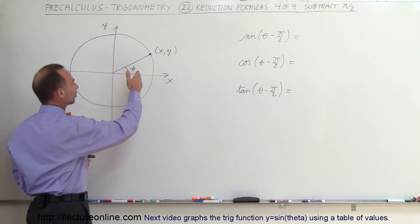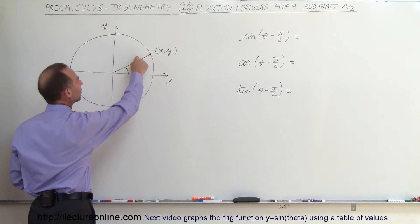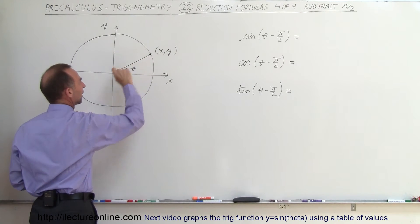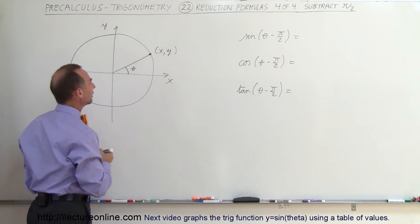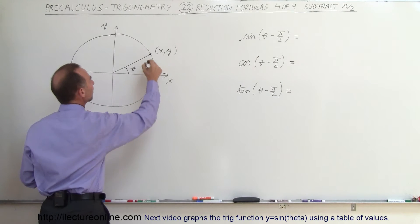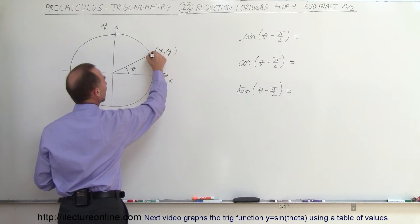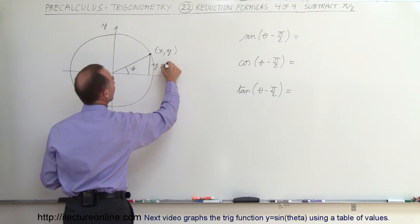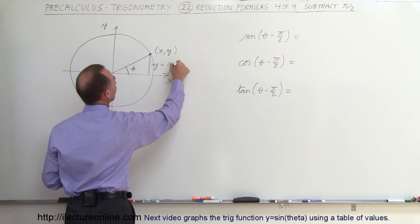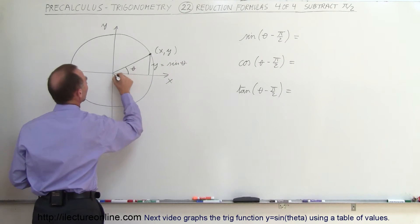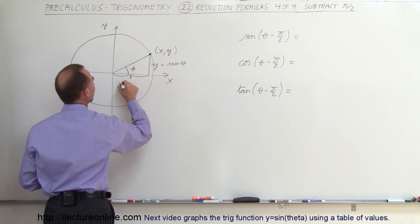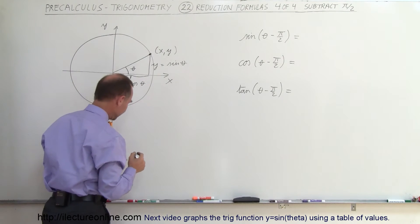Here we have our unit circle with radius 1. We have the x, y value on the unit circle based on the angle theta, which means that the y value is equal to the sine of theta, and the x value is equal to the cosine of theta.